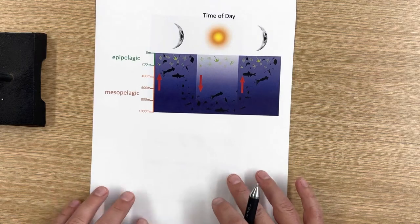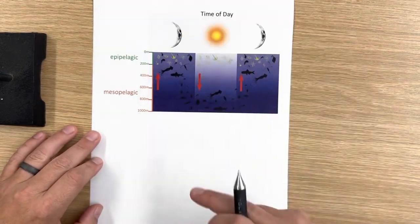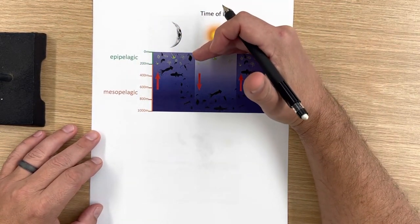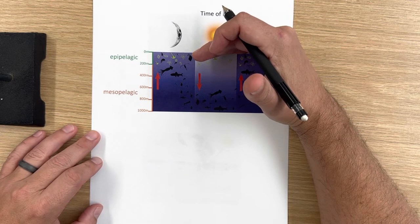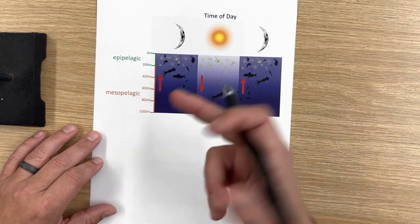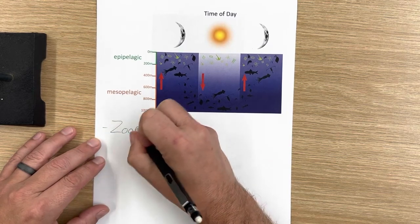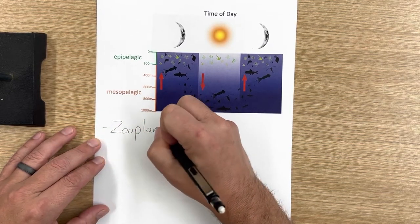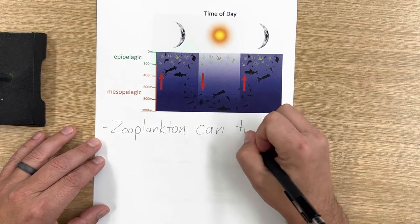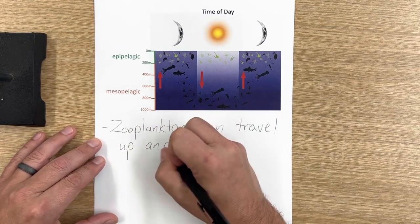Now, what they can do is zooplankton can travel up and down the water column. So they can go from the surface, where the ocean meets the atmosphere, and they can travel down, they can migrate down to very deep depths, like a thousand meters deep.